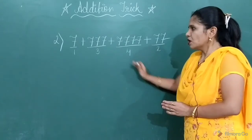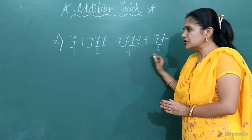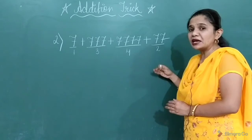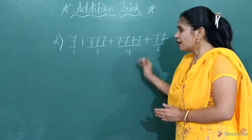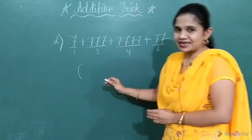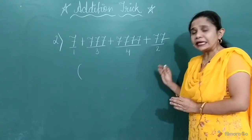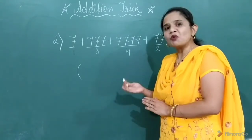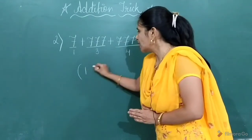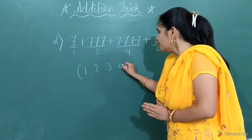Same method you have to follow. Now, after writing the numbers exactly below that, how many times it's repeating, what you have to do? You have to just arrange these numbers in the increasing order. Means from smaller to bigger. So 1, 2, 3, 4.